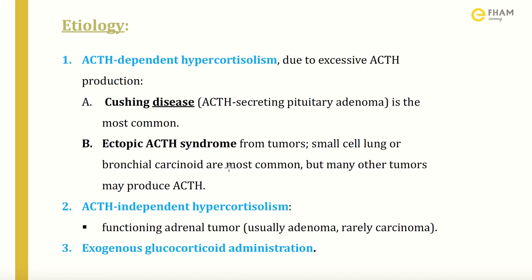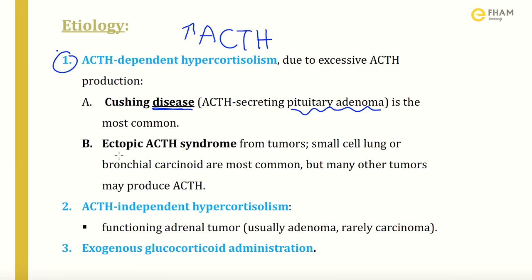Let's start with etiology. We have three etiologies in Cushing Syndrome. The first is ACTH-dependent hypercortisolism, which means hypercortisolism is a result of increased ACTH level. This is due to two reasons: either Cushing disease, which is caused by pituitary adenoma — when it involves pituitary adenoma, it is called a disease, not a syndrome — and the second reason for ACTH-dependent is ectopic ACTH syndrome.